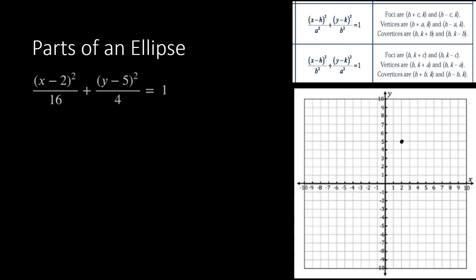For vertical orientation, the standard equation is (x minus h) squared over b squared plus (y minus k) squared over a squared equal to 1. We determine our foci by h, comma k plus or minus c. Vertices are h, comma k plus or minus a. And co-vertices are determined by h plus or minus b, comma k.